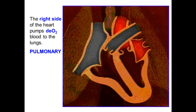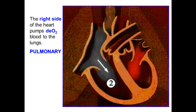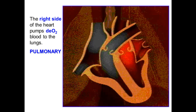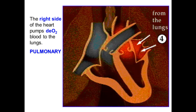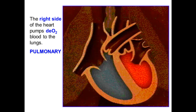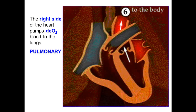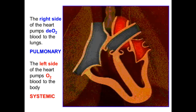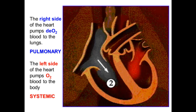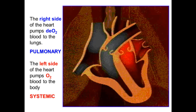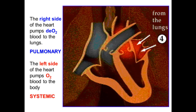The right side of the heart is pumping what we call deoxygenated blood, symbolized as DO2. Because the right side of the heart is pumping deoxygenated blood to the lungs, we call that the pulmonary system — so whenever you see pulmonary, think lungs. The left side of the heart, on the other hand, is pumping oxygenated blood to the whole body, and we call that the systemic system.